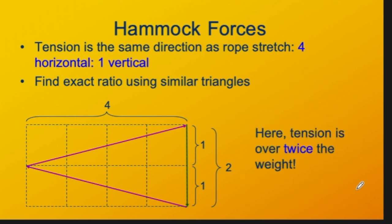This would be even more if the hammock were tighter, if it sagged less, and it would be less if the hammock sagged more. The smallest possible value for the tension would be half the weight. And that would be the case if the hammock is like a swing, the two cables are hanging straight down. They're not opposing each other horizontally.